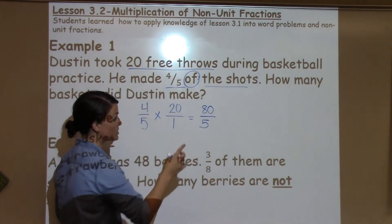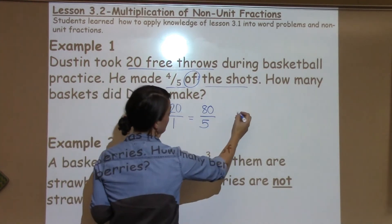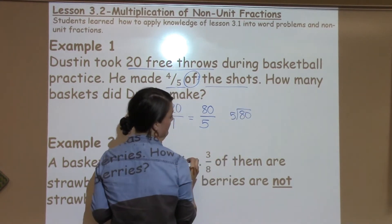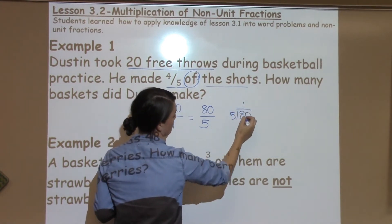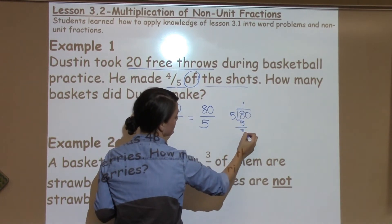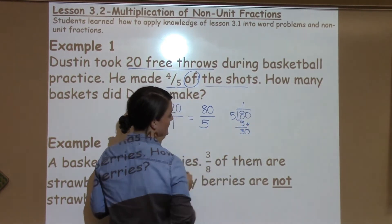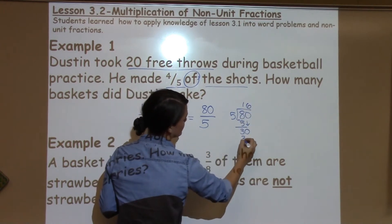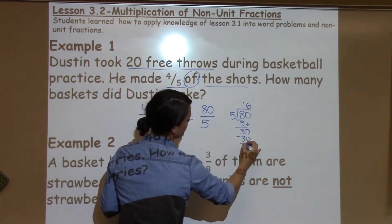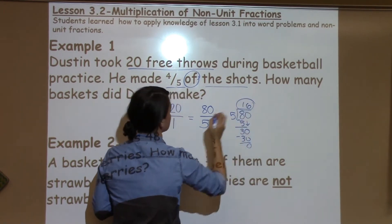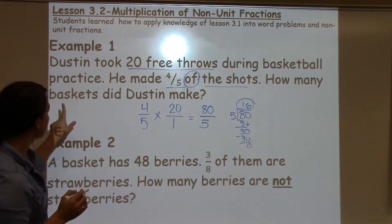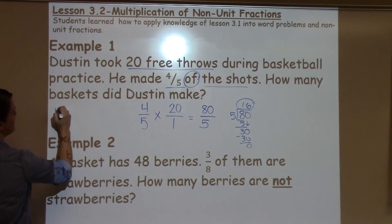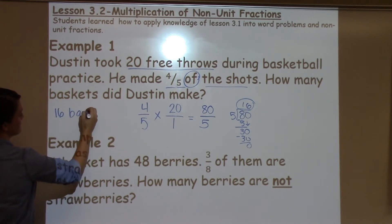This is an improper fraction — the top is too big, so I'm going to have to divide. 80 divided by 5: 5 goes into 8 one time. When I subtract, I'm left with 3. I bring down my zero. 5 goes into 30 six times — it gives me exactly what I need. So my final answer is 16. To make sure I'm writing the correct label: how many baskets did Dustin make? 16 baskets.